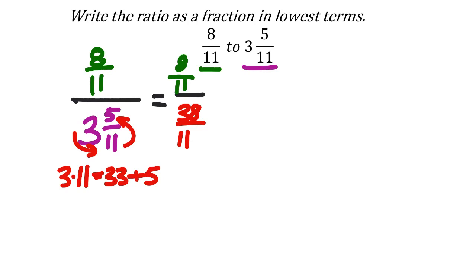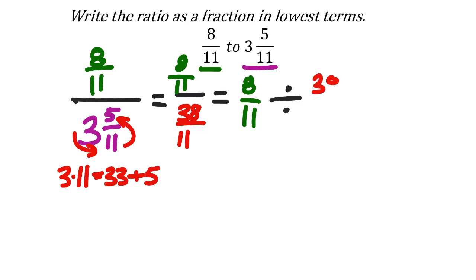For complex fractions like this, we can rewrite as a division problem: 8 over 11 divided by 38 over 11. With division we can see exactly what's going on — numerator divided by denominator.